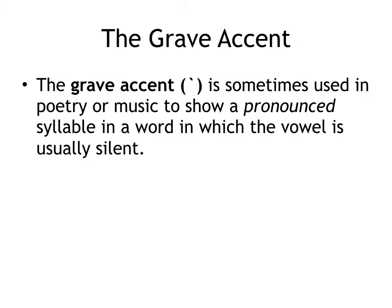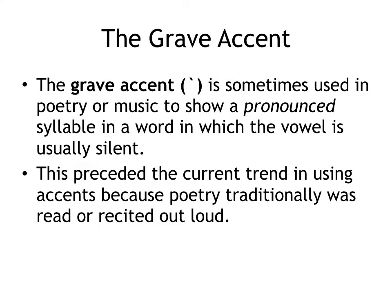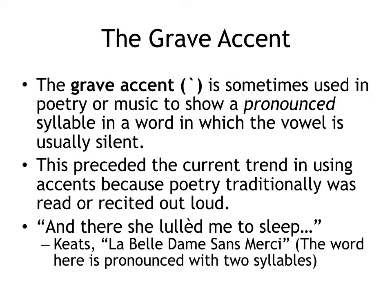However, most accent marks that you do see in English are with vowels. The grave accent — the accent that goes from upper left to lower right — is sometimes used in poetry or music to show a pronounced syllable in a word where the vowel is usually silent. This would be done only in special cases, and this preceded the current trend in using accents because poetry traditionally was read or recited out loud. In most versions of this poem, you will see the accent mark: 'And there she lullèd me to sleep.' Normally we pronounce the word 'lulled,' but here it has that grave accent to show that the E was to be pronounced as part of a second syllable — usually to keep the meter or to fit the tune of a song.